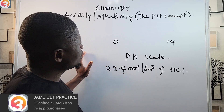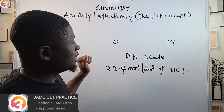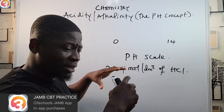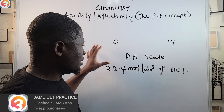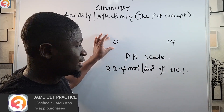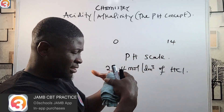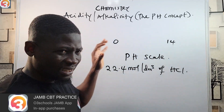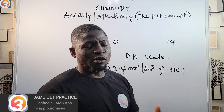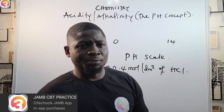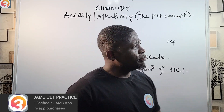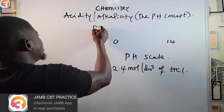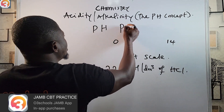The pH scale is like a meter. As the numbers go from 0 to 14, they express the acidity or alkalinity of a substance. Also, the term 'pH' itself means potential of hydrogen.